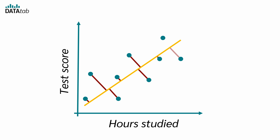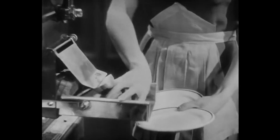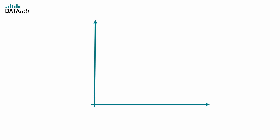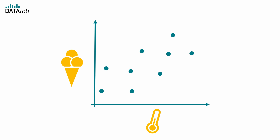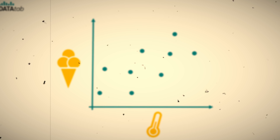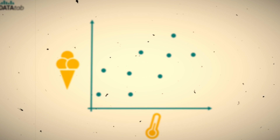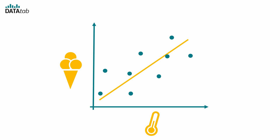This line minimizes the distance between itself and all the data points — kind of like trying to keep all your friends happy during a group project. So what's the big deal about this line anyway? Why does everyone rave about it like it's the coolest thing since sliced bread? Imagine you're trying to predict how much ice cream you'll sell based on the temperature outside. You've got a bunch of dots on a graph showing past sales. Each dot is like a little story about a hot day and how many scoops you sold. But when you look at all those dots, it's like trying to read a story with missing pages — confusing, right?